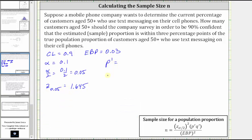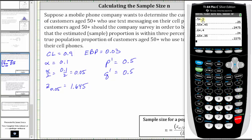Now let's talk about P-prime and Q-prime, where P-prime is the sample proportion and Q-prime is 1 minus P-prime. Notice how P-prime times Q-prime is in the numerator that gives us the value of N, which means we want to use the values for P-prime and Q-prime that give us the largest possible product so that we can be guaranteed that N, the sample size, will be large enough to satisfy the given requirements. Since P-prime plus Q-prime equals 1, we use 0.5 for both. 0.5 times 0.5 equals 0.25, which is the largest possible product, as any other combination gives a smaller result.